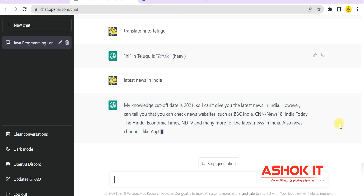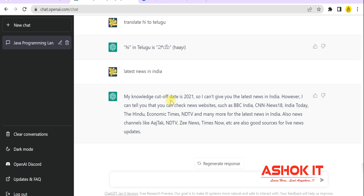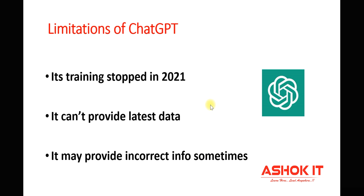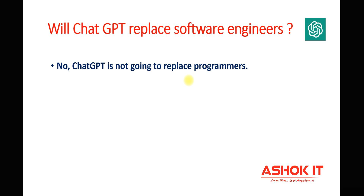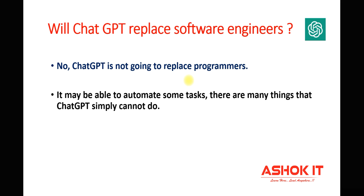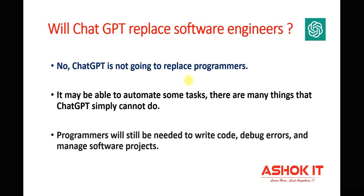This is a key limitation — ChatGPT cannot provide the latest data since its training stopped in 2021. Also, it may sometimes provide incorrect information, so you need to verify responses carefully. The next big question: will ChatGPT replace software engineers? No — ChatGPT cannot do everything. Programmers are still required to write, debug, and manage software projects as per client requirements. ChatGPT can automate some tasks, but it cannot fully develop a project.